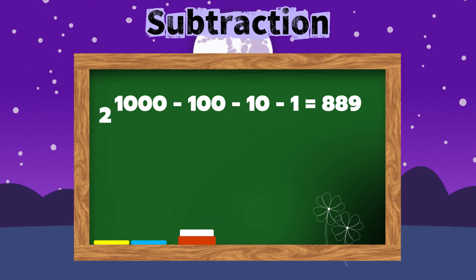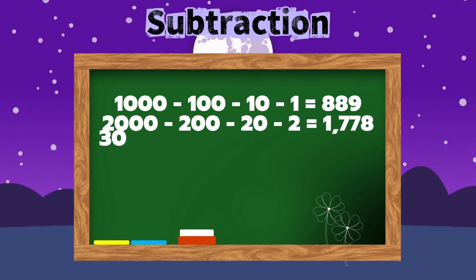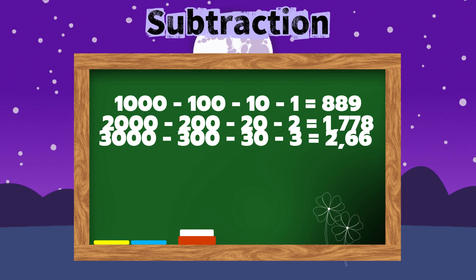2,000 minus 200 minus 20 minus 2 is equals to 1,778. 3,000 minus 300 minus 30 minus 3 is equals to 2,667.